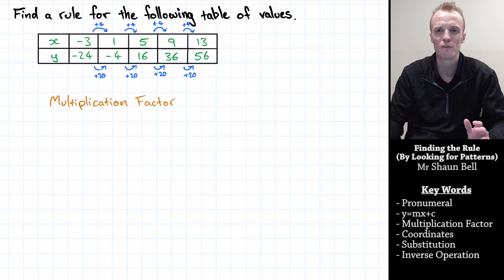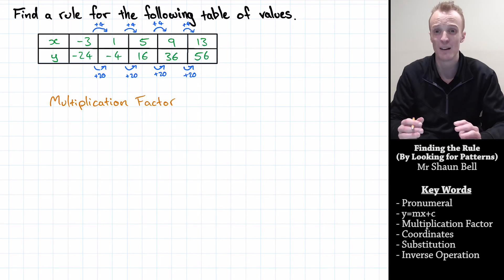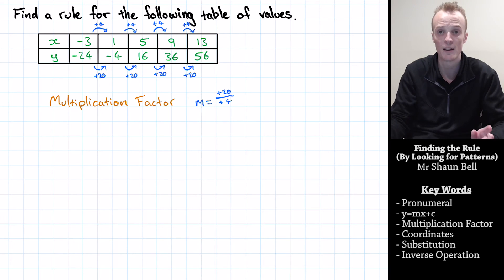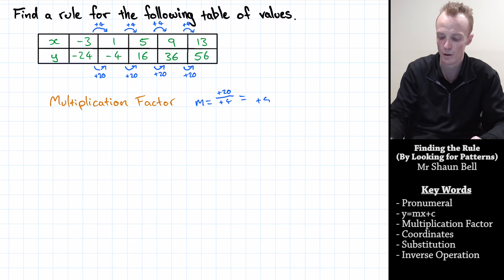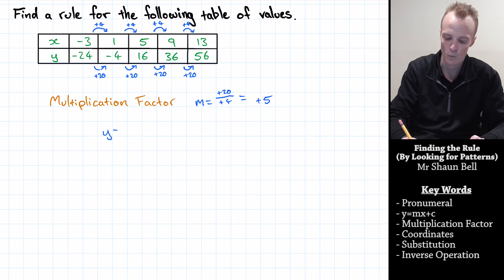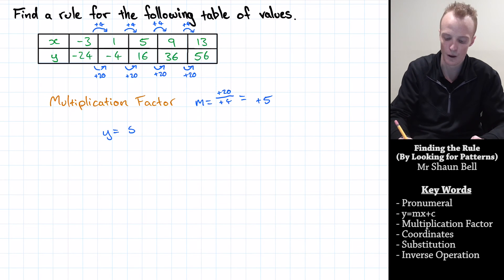Our multiplication factor is how much does y change for every plus 1 step in x. But we've only got plus 4 steps in x, so we find the multiplication factor by taking the change in y — plus 20 — and dividing it by the change in x — plus 4. Positive 20 divided by positive 4 equals positive 5. So substituting into y equals mx plus c, our multiplication factor is 5, giving us y equals 5x plus c.